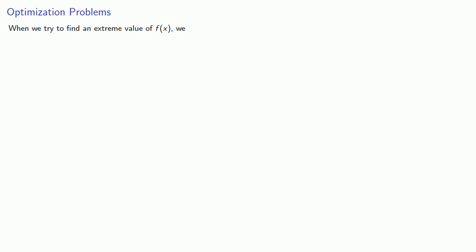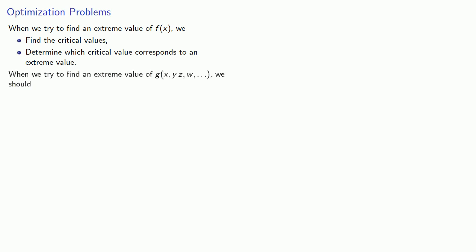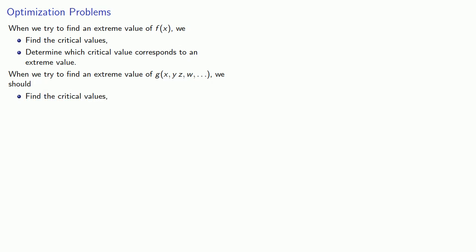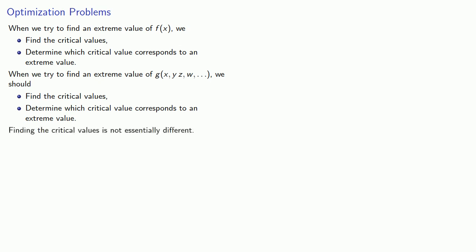When we try to find an extreme value of f of x, we find the critical values, then determine which critical value corresponds to an extreme value. That only works with functions of one variable. When we try to find an extreme value of a function of several variables, we should find the critical values and determine which critical value corresponds to an extreme value. Finding the critical values is not essentially different.